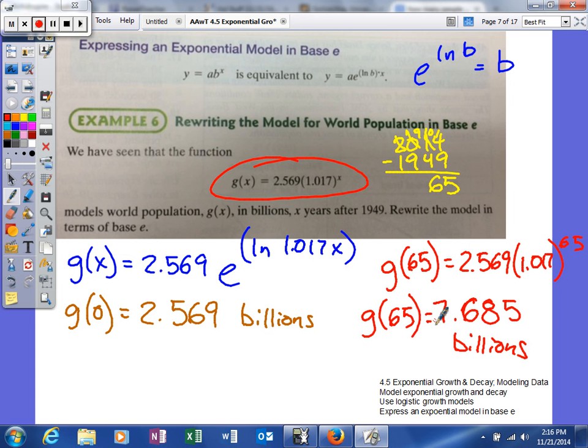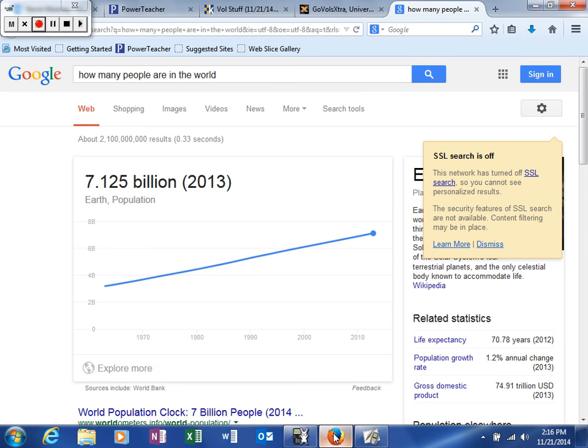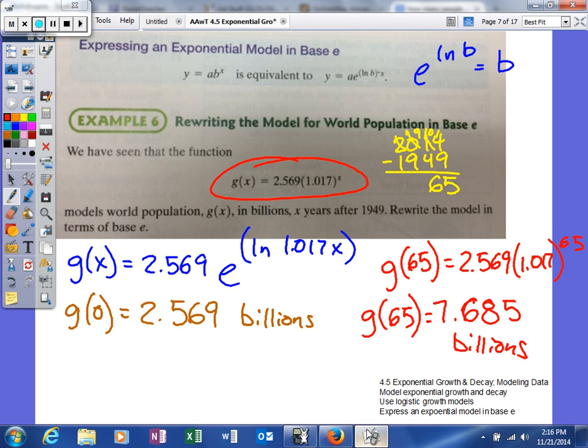And what we're going to do is we're just going to see how accurate that might be. Now, granted, we are going to use the internet, but you can see we got 7.685 billion. And what they tell us is it's 7 decimal 125 billion. And that's, of course, in the year 2013, so we're one year later. So it's a pretty reasonable estimate that the world's population would increase another that many over the course of one year. So fun times working with exponential growth.